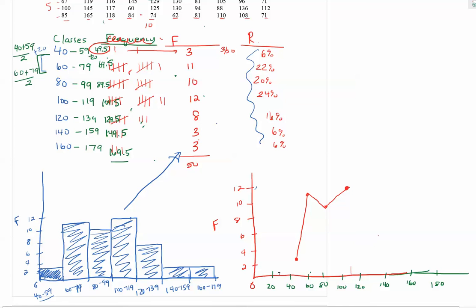And then we have 129.5 with a height of 8. 149.5 with a height of 3. And last one also has a height of 3 and its midpoint is 169.5, so it'll be a horizontal segment there.